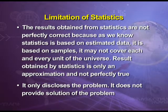Its fourth problem is that statistics only discloses the problem; it does not provide a solution to the problem. For example, average income of an Indian is rupees 1500 per month, which is very low compared to per person income of developed countries. Statistics gives only the information that per person income is low and shows that our economy is poor, but does not give any solution.